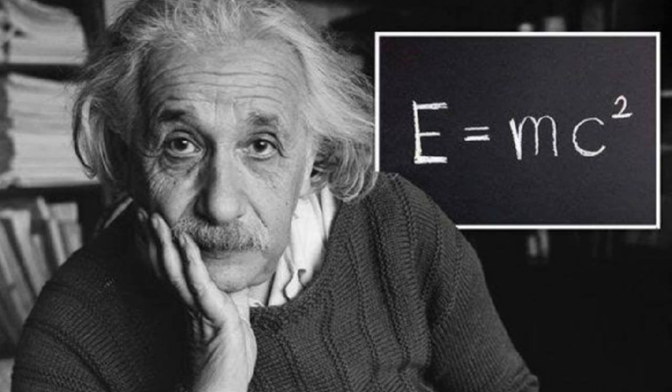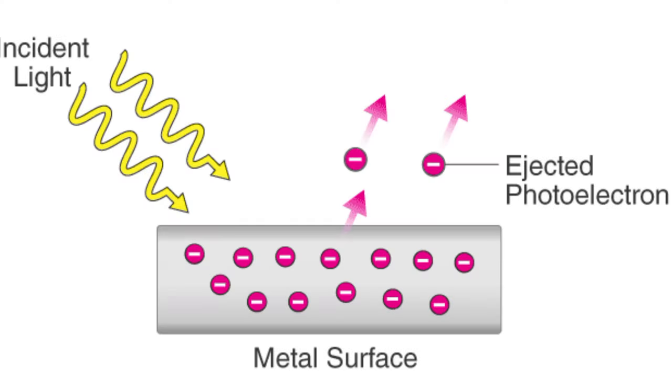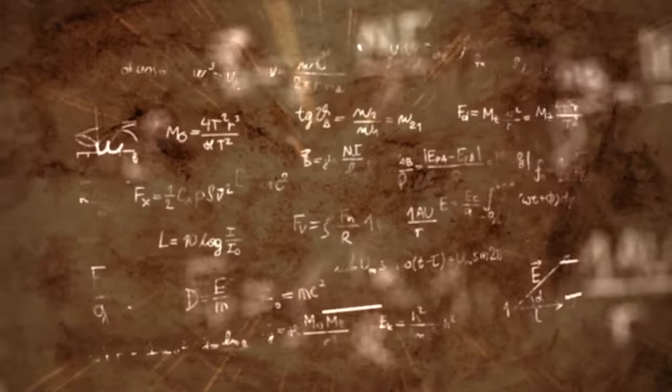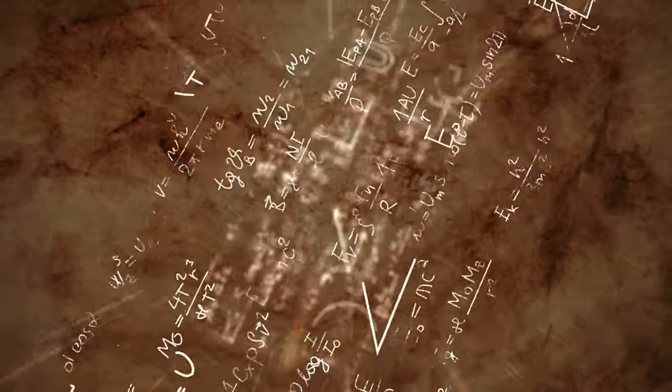Einstein was a physicist who shocked everyone when he released the theory of special relativity, E equals mc squared, and the photoelectric laws. Because of this, he won the Nobel Prize.